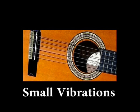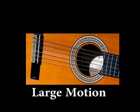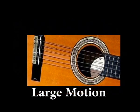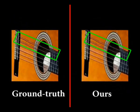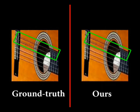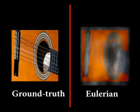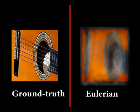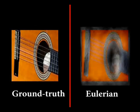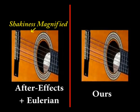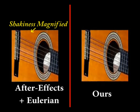Next, we examine the guitar sequence from the Euler magnification paper. In this sequence, the strings of a guitar are vibrating, however the vibration is too small to be seen. We take this sequence and add a global motion, then process the resulting sequence with different magnification techniques. Our technique reveals the vibration of the strings, which is very similar to the ground truth. Directly applying Euler magnification to the moving sequence, however, generates significant blurring artifacts. Finally, After Effects stabilization errors get magnified, generating a shaky magnified sequence.